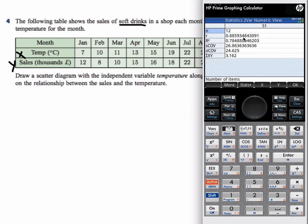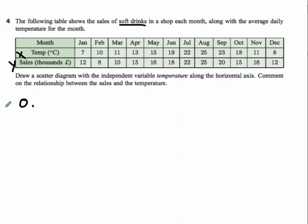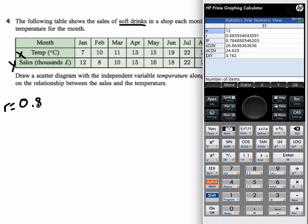And here's a bunch of information, but R is the correlation coefficient. It's 0.886. So let me jot that down, 0.886.